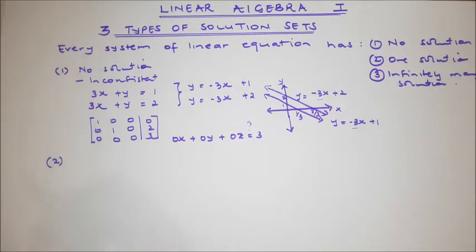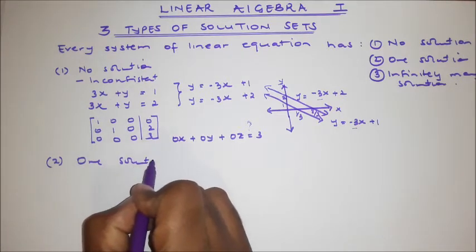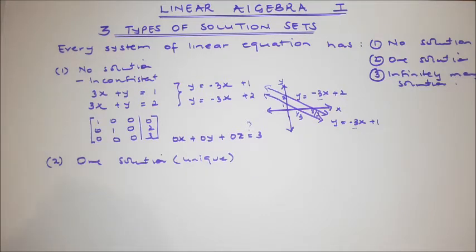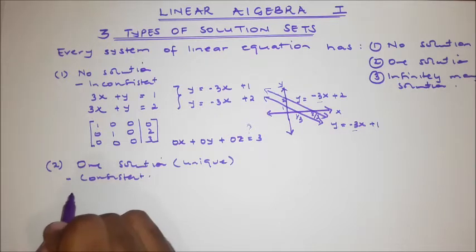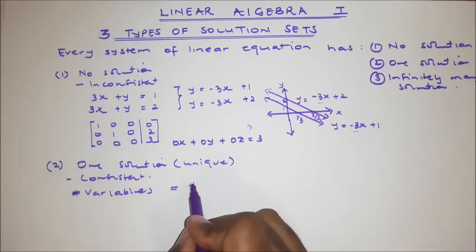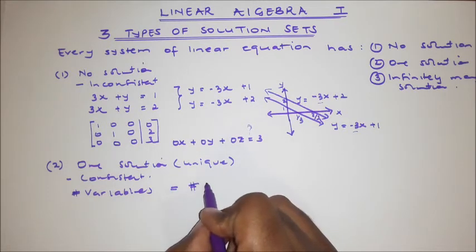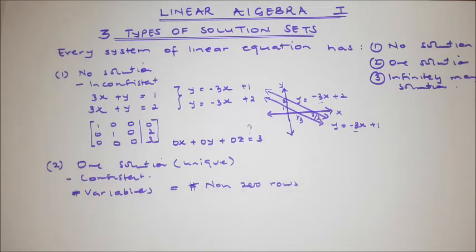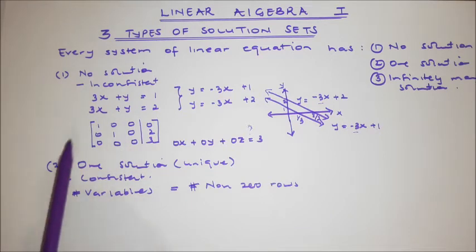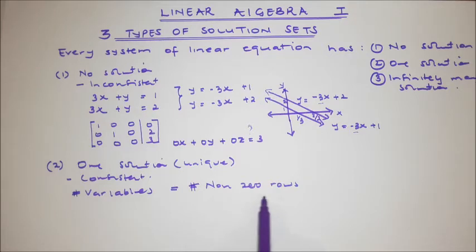Secondly, let us look at a linear system that has got a unique solution or one solution. A linear system with a unique solution is consistent. For a unique solution, the number of variables equals the number of non-zero rows. For example, in the inconsistent matrix we saw, there were three variables but the number of non-zero rows did not match. For a linear system with one solution, the number of variables and the number of non-zero rows will be the same.